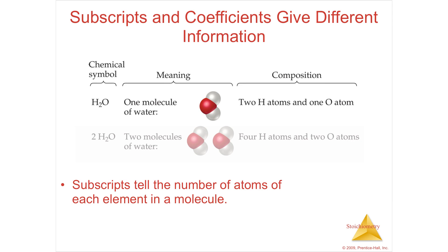So the subscripts tell the number of atoms in each molecule. So here's H2O. This is telling you that you have two hydrogen atoms attached to this molecule. And the coefficient tells you that you have two molecules.